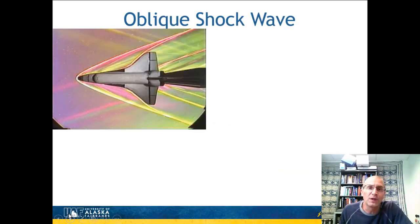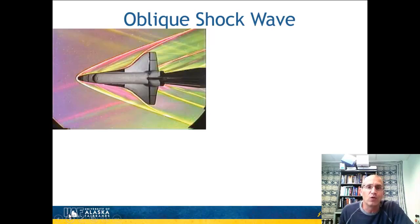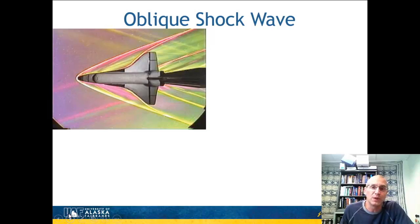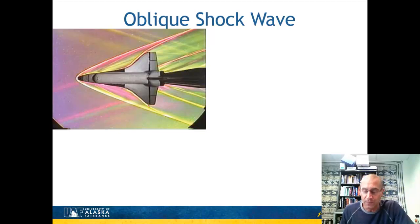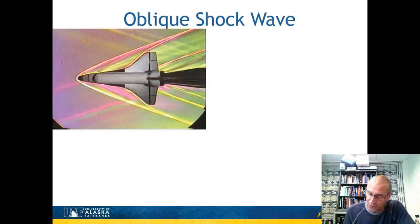An oblique shock wave is different from a normal shock wave. In a normal shock wave, the shock wave plane is normal to the direction of flow. An oblique shock wave is at an oblique angle. Here is a model of the space shuttle in a supersonic wind tunnel. You can see a shock wave forming at an angle to the direction of flow.